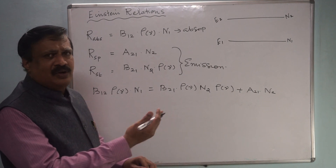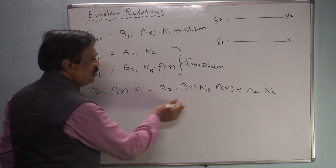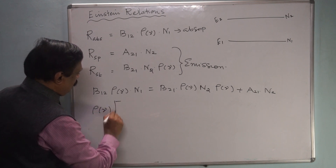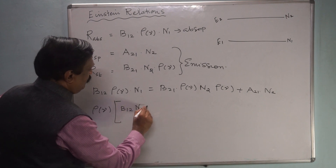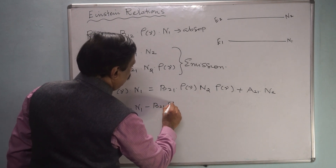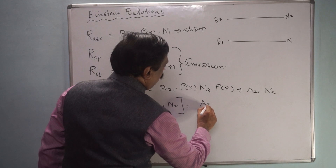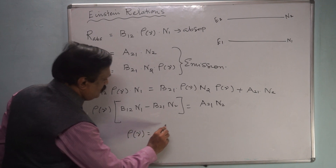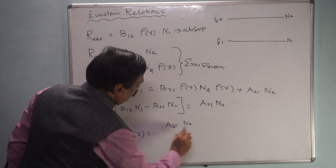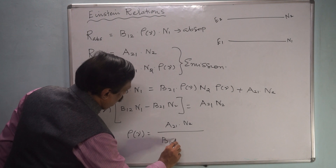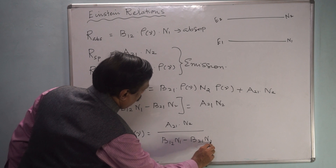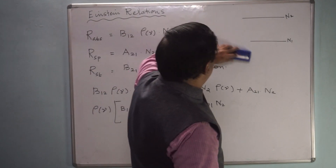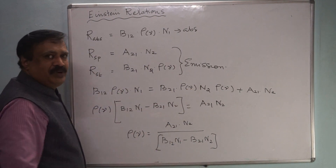After this it is mere mathematical simplification. Bring the ρ terms together — since ρ appears on both sides, bring B21·ρ·N2 to the left-hand side and take ρ common. This gives: ρ times (B12·N1 − B21·N2) equals A21·N2. Therefore, ρ equals A21·N2 divided by (B12·N1 − B21·N2).